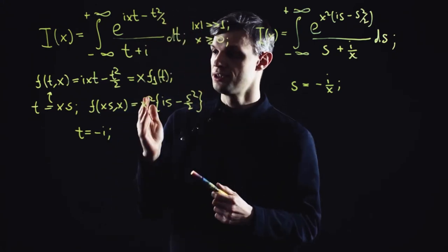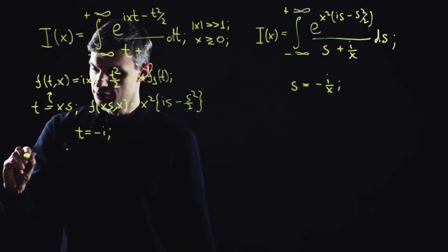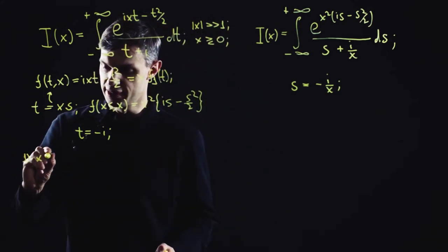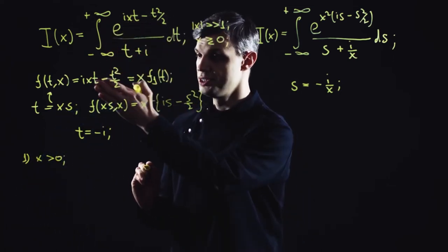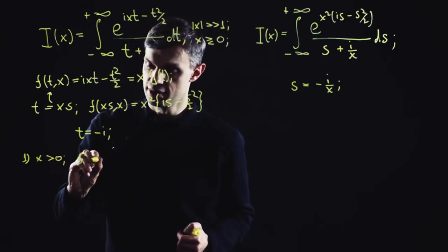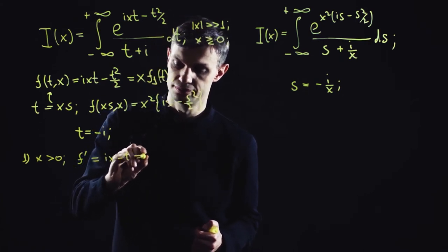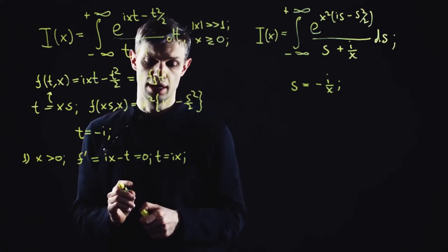Let's first address the first technique without rescaling. First, we consider the case of large and positive x. Let's find out the position of the saddle, and the stationary point equation is given by simple differentiation. So the saddle is positioned at point ix.